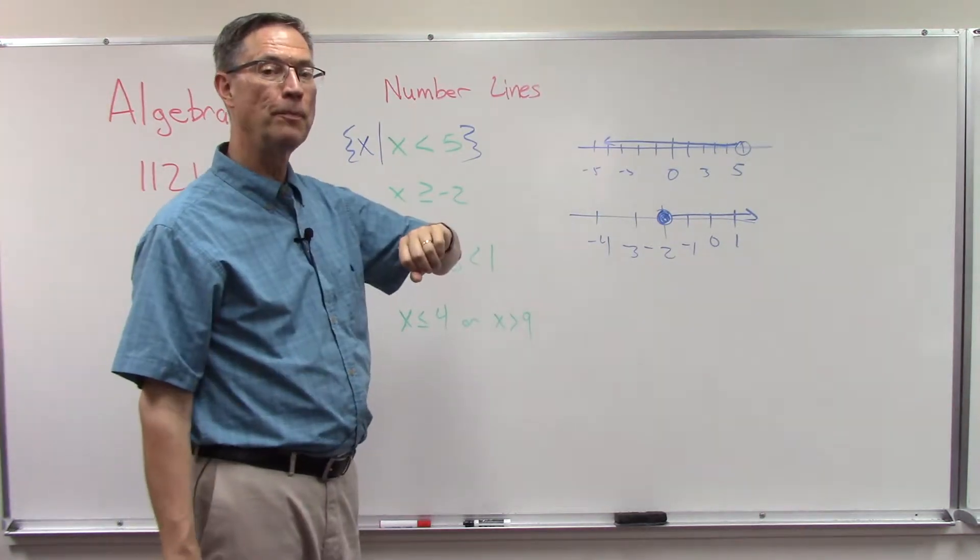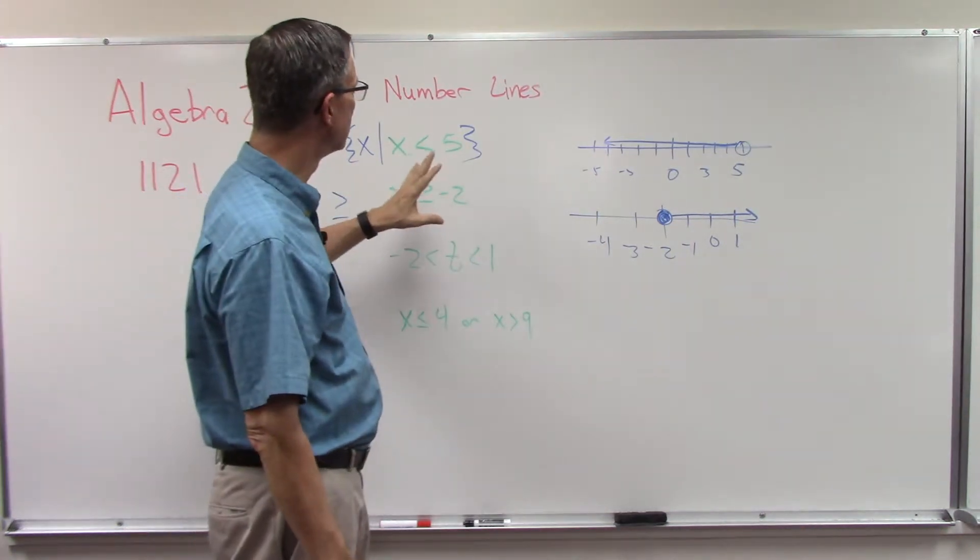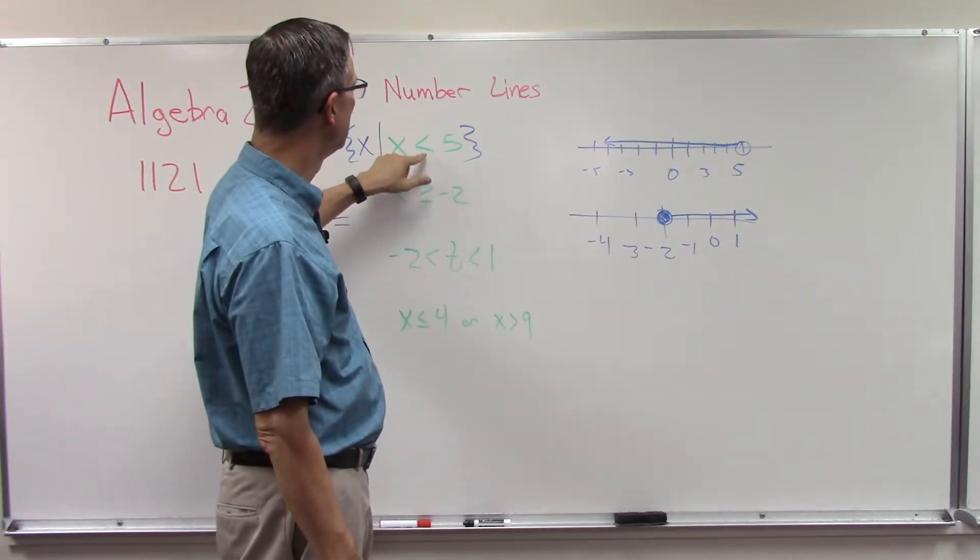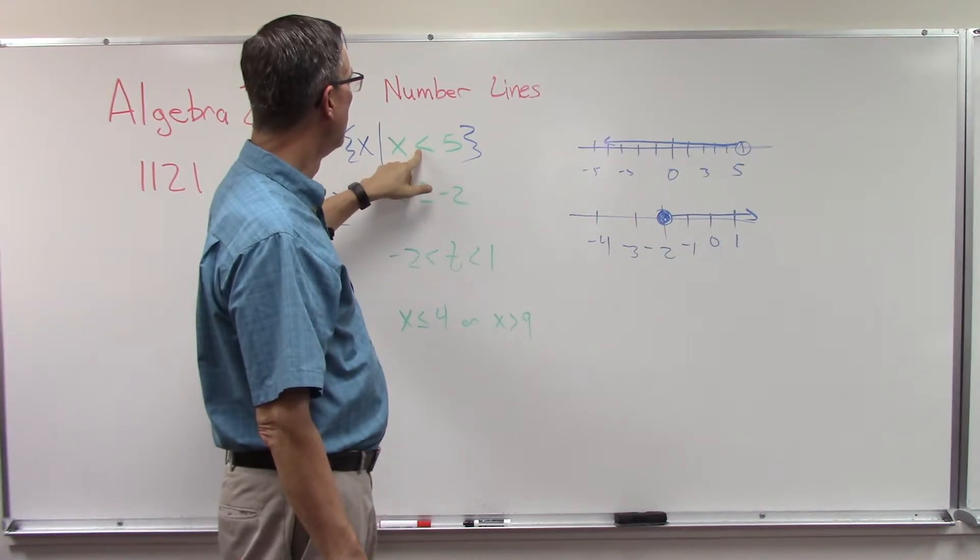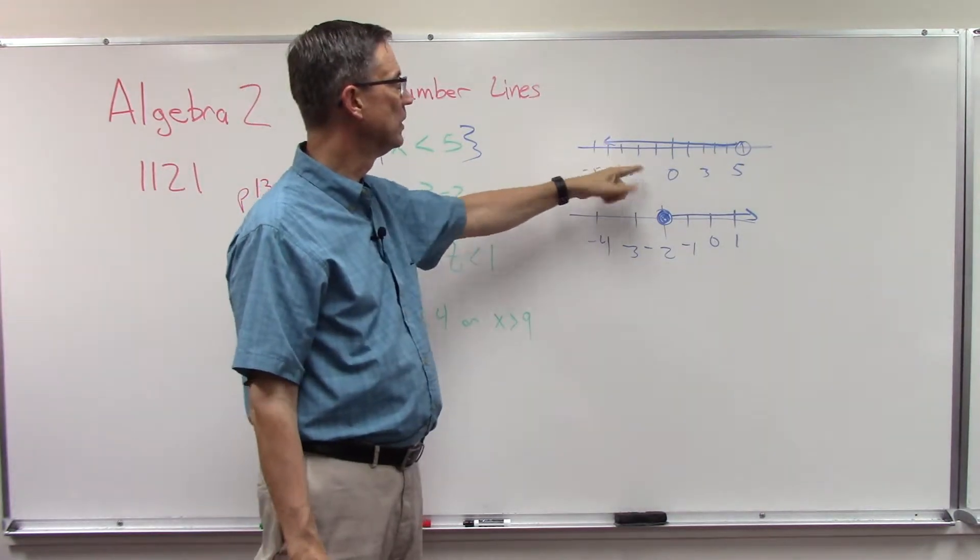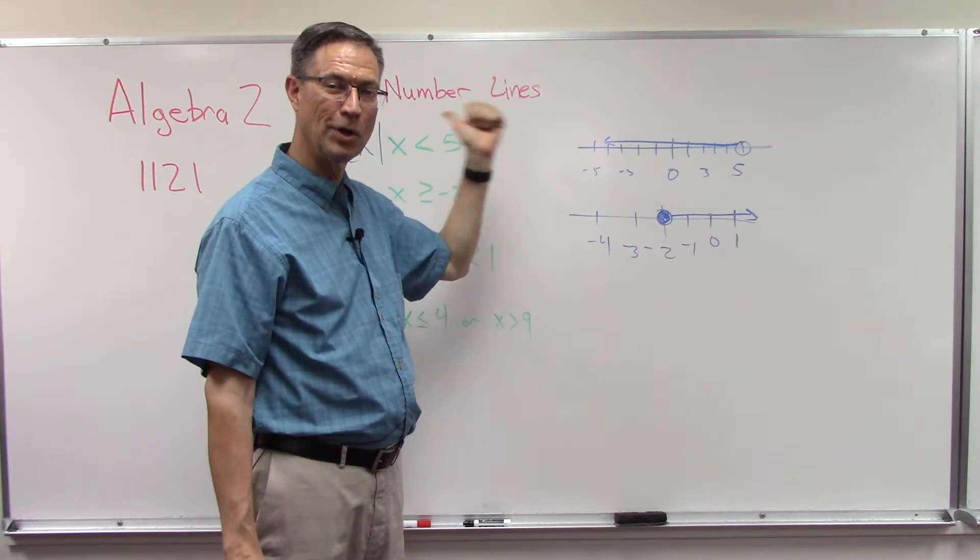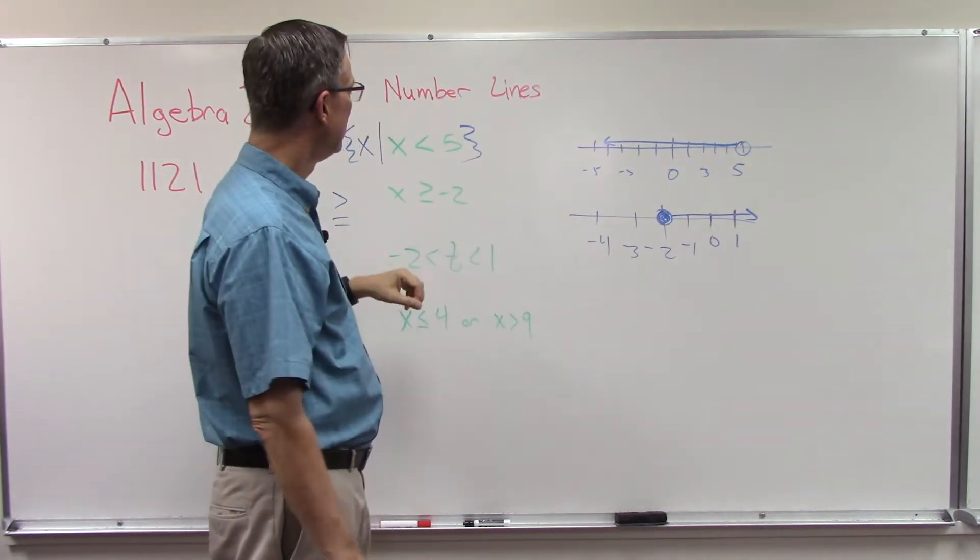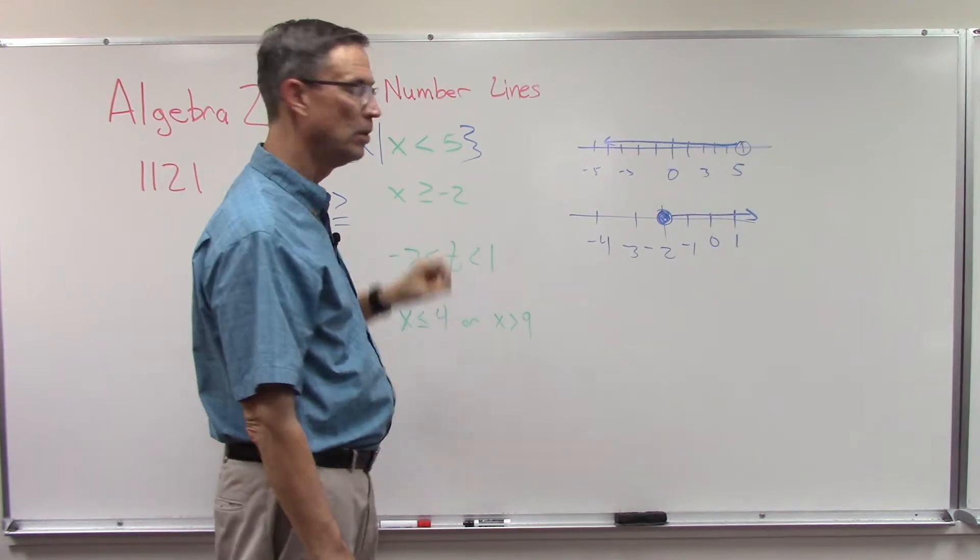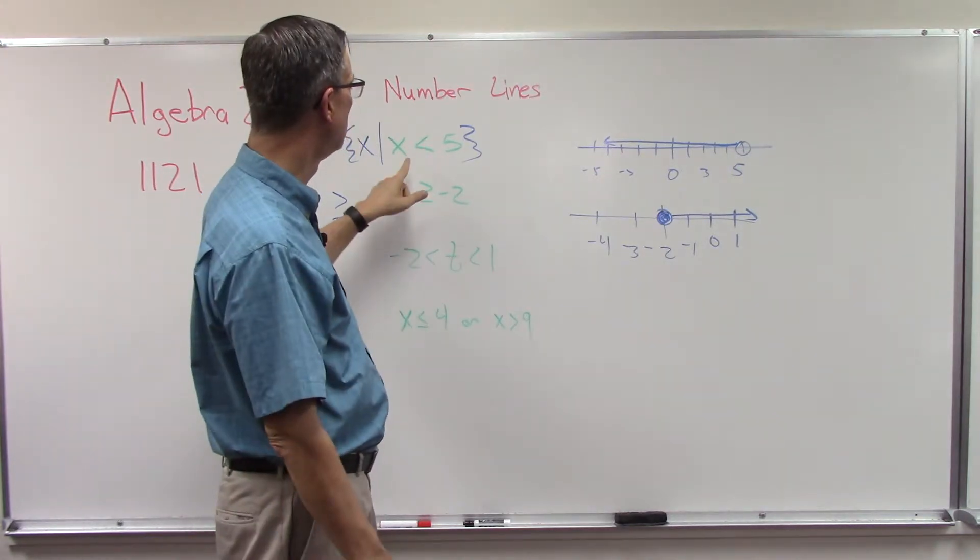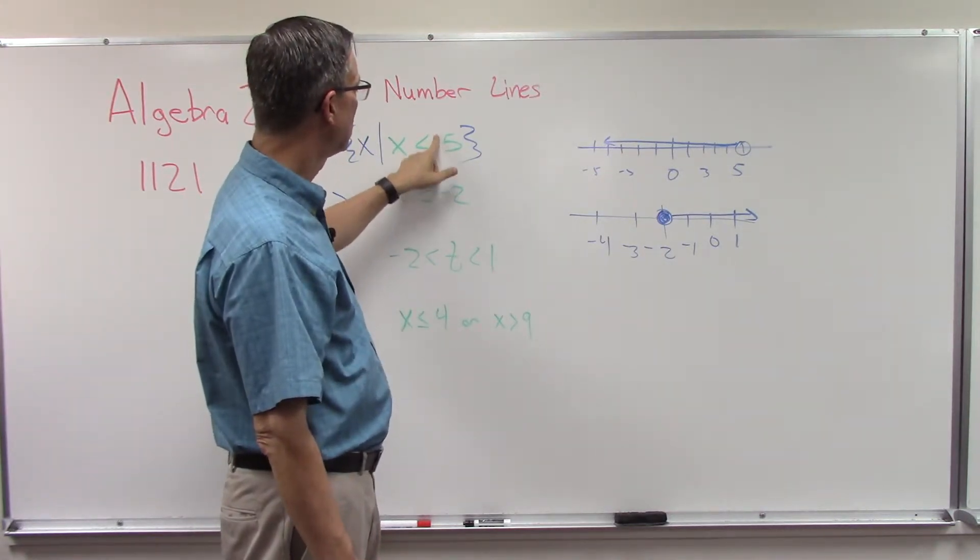One other thing I want to point out: if you get confused, and some students do trying to keep track whether this is less than or greater than, notice that the arrow on the end here is pointing the direction that this arrow needs to go. The other way to picture it is that the smallest number is closest to the point. It's always pointing to the smaller one. The one next to the wide part is the bigger number.